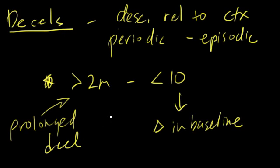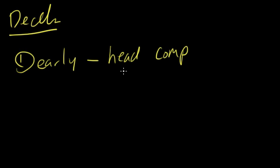Let's talk about the different types of decels now. My handwriting is going to get worse as we move on, so pardon me for that. The first type is early decels. Early decels are caused by head compression and are common between 4 and 7 centimeters.